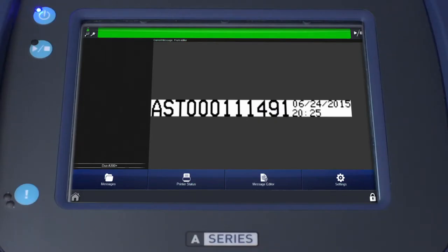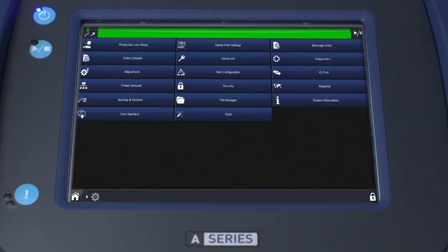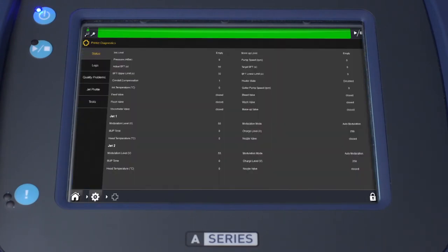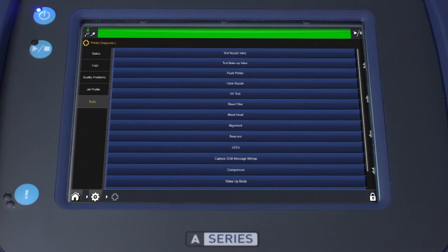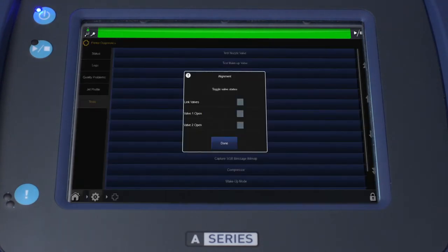From the front panel, select the Settings button, then Diagnostics, followed by Test on the lower left-hand side of the screen. Select Alignment, then select the checkmark to start the jet.